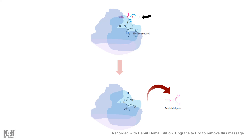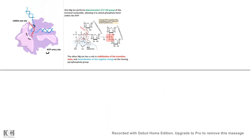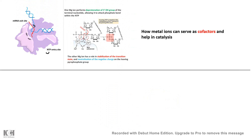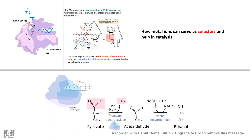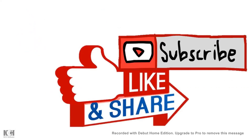In this video we understood how metal ions can serve as cofactors and help in catalysis, taking the example of magnesium as an important cofactor for RNA polymerase. We also took the example of a complex organometallic group, thiamine pyrophosphate, derived from vitamin B1, and looked at how it helps in catalysis. I hope this video was helpful and informative. If you liked it, give it a thumbs up, like, share, and subscribe. Thank you.